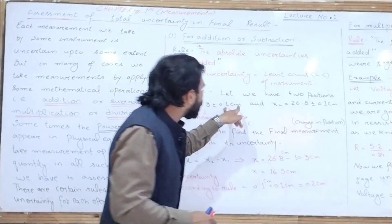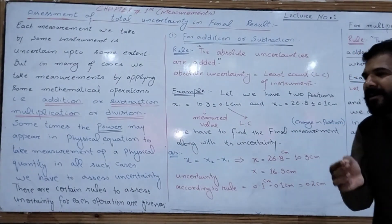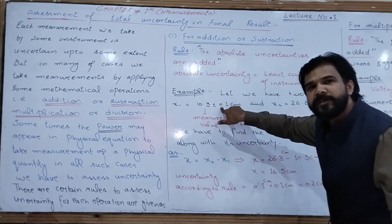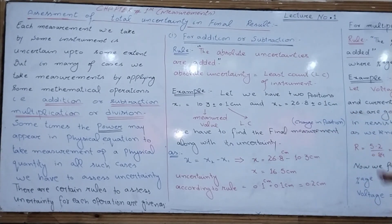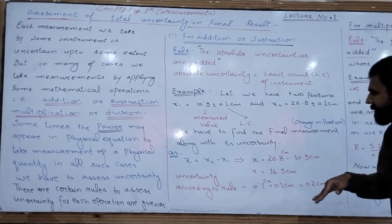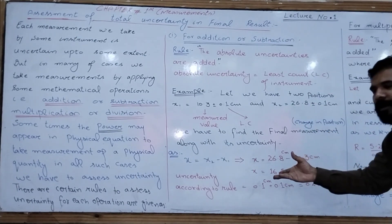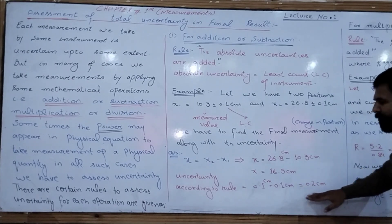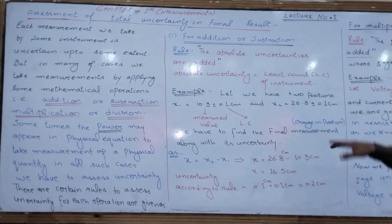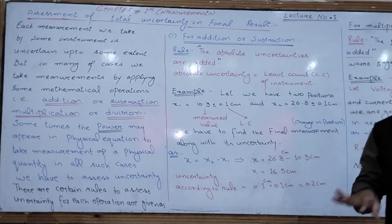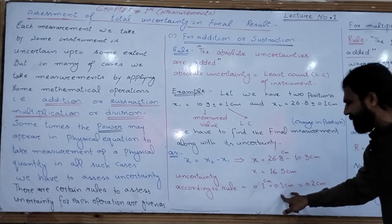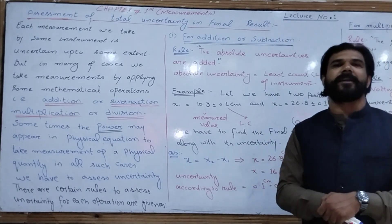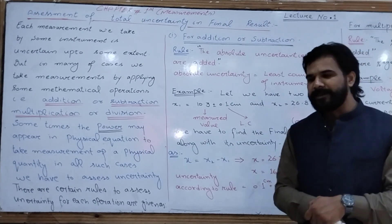We add the two least counts to get the final uncertainty. The least count in the first measurement is 0.1 cm and in the second measurement is 0.1 cm. The total uncertainty is therefore 0.1 + 0.1 = 0.2 cm, which is the uncertainty in the final result.